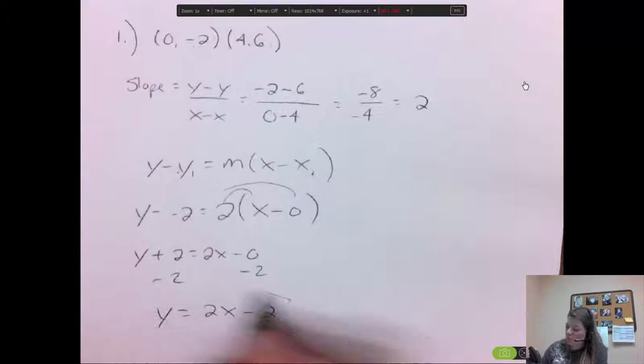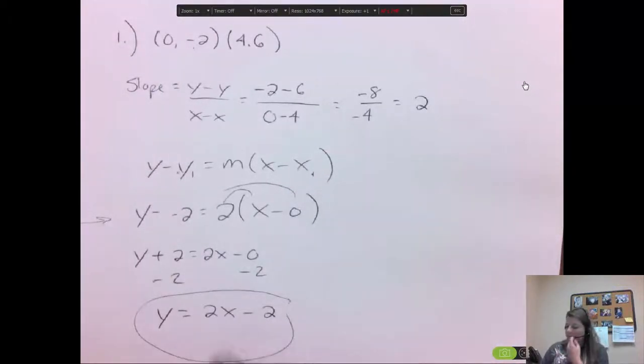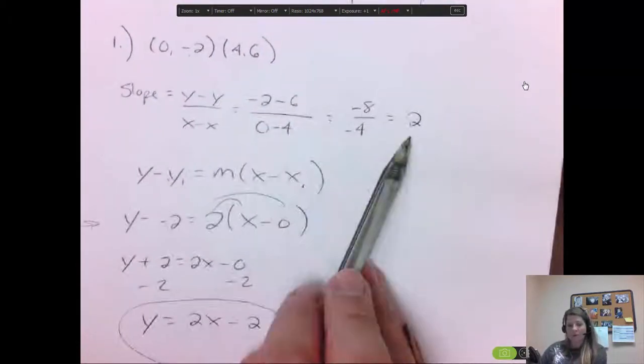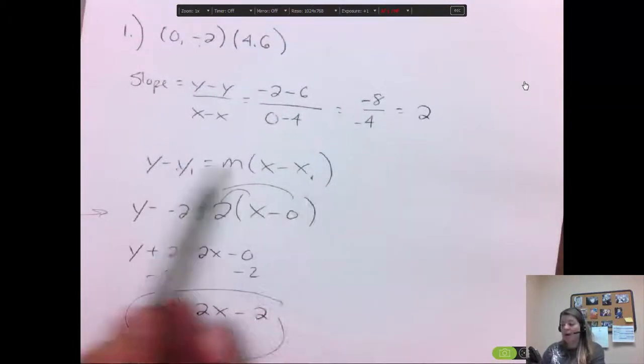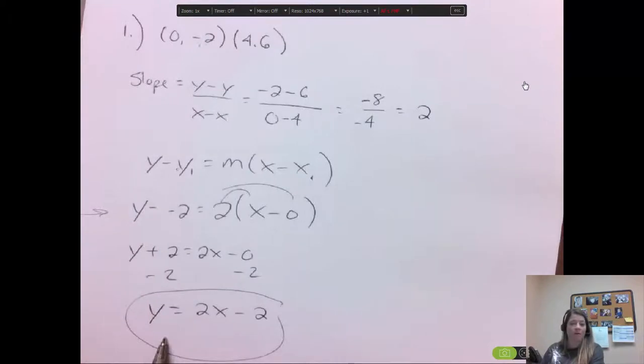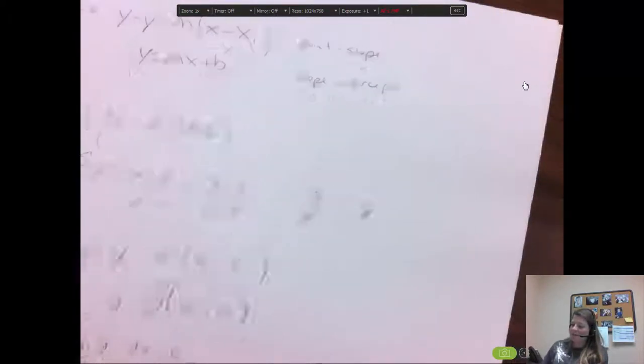That's the equation in slope intercept. So sometimes you can be done here, but typically they like you to keep going. So 2 points, you find the slope. You use point slope to write it in slope intercept form. So that's really the harder ones that you could get to.